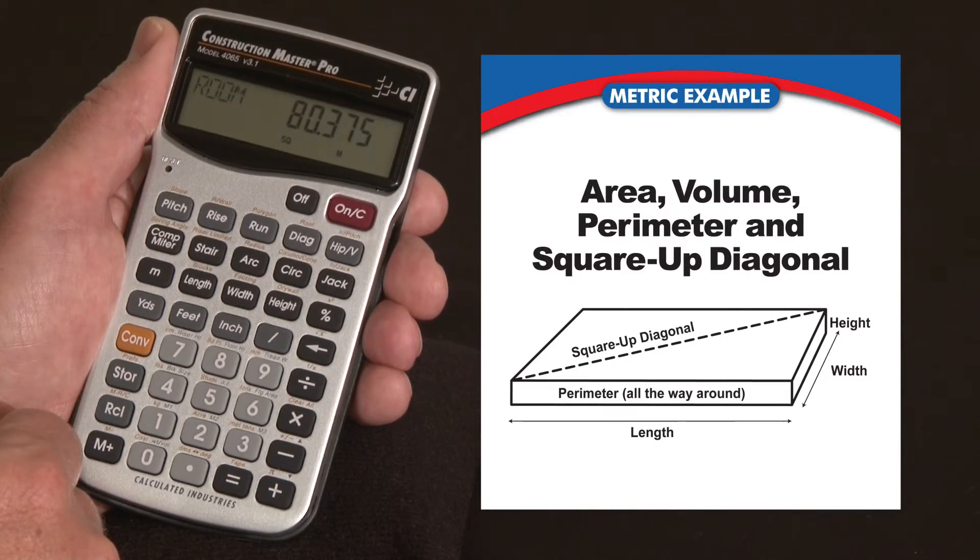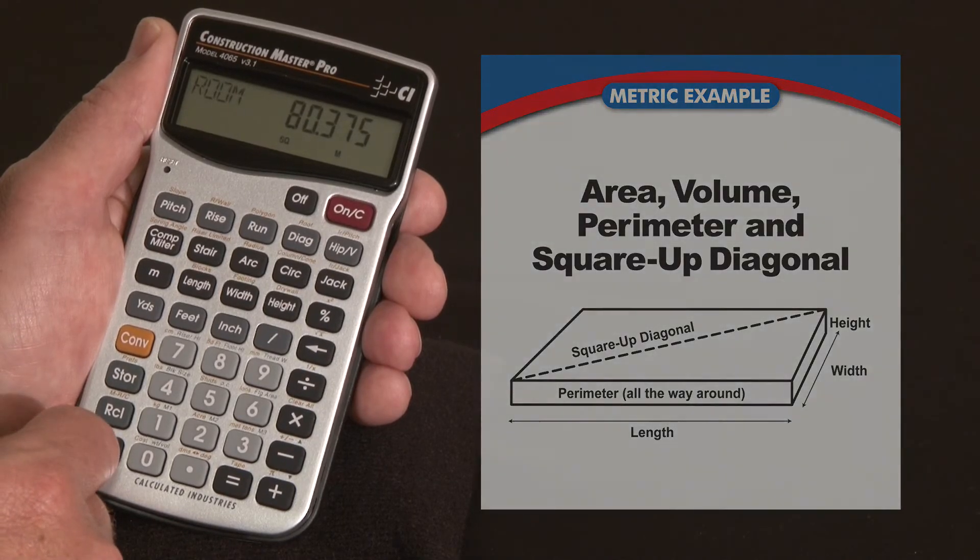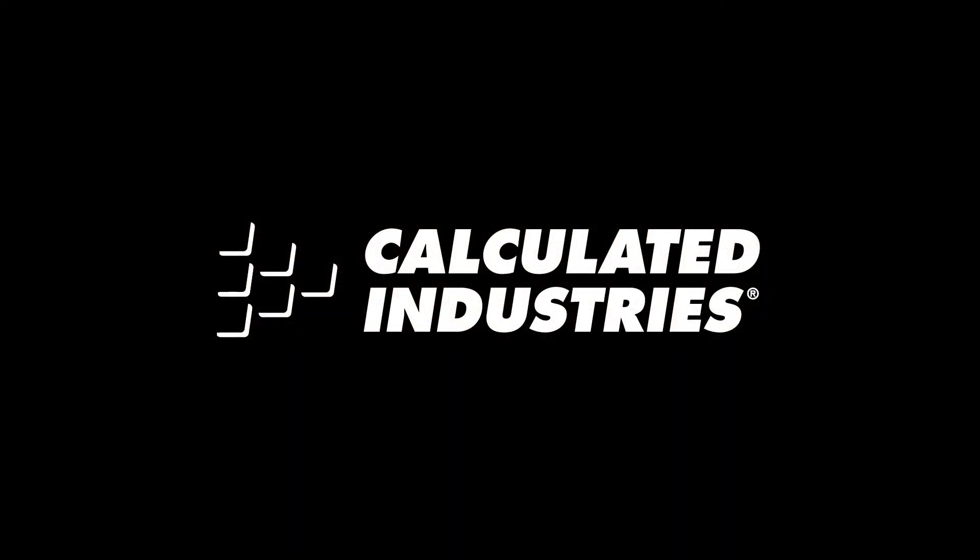So that's a quick overview of using the length, width, and height functions to calculate areas, perimeters, volumes, and square-ups. For more details, you can download our user guide at www.calculated.com slash support.